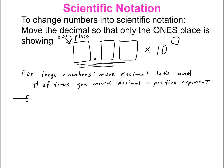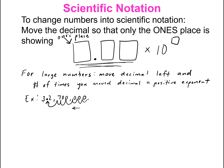Here's a quick example. Let's say you have the number 32,700,000 and you don't want to write that whole number out. We assume the decimal is at the end of the number, and since this is a large number, we're moving the decimal left: one, two, three, four, five, six, seven. So the decimal goes right there before the three. Rewriting it, we drop the leading zeros and write 3.27, and we counted seven times that we had to move the decimal, so it's 3.27 times 10 to the seventh power.